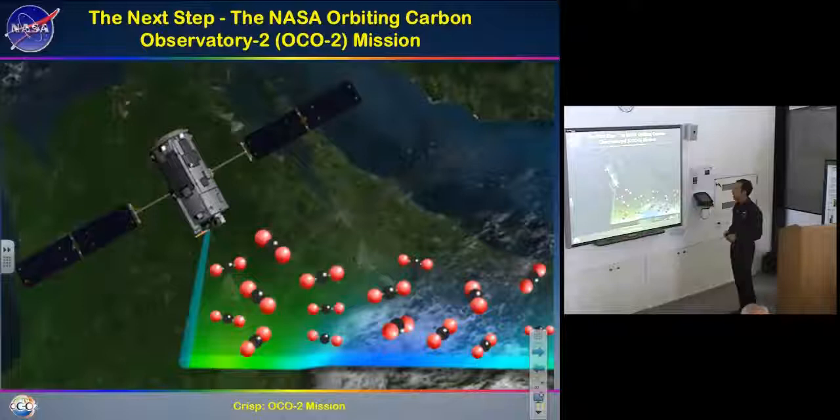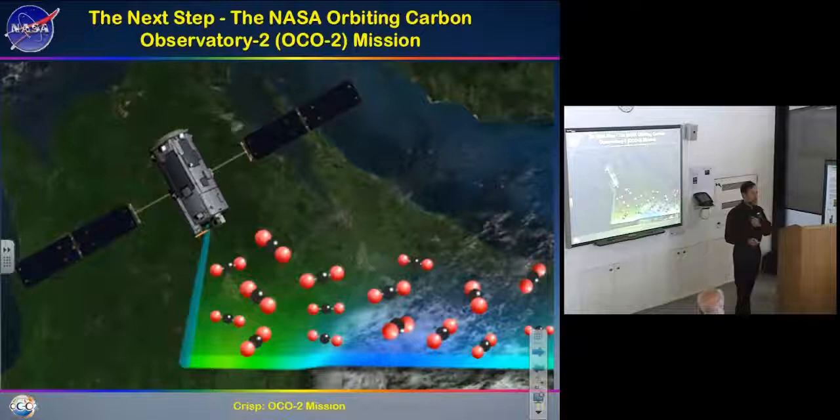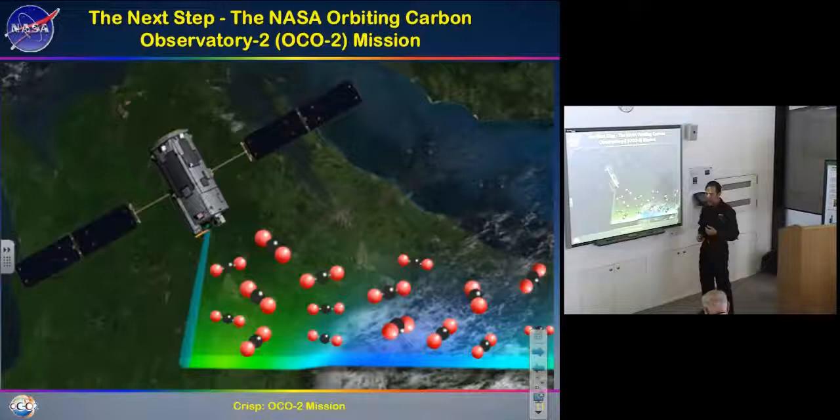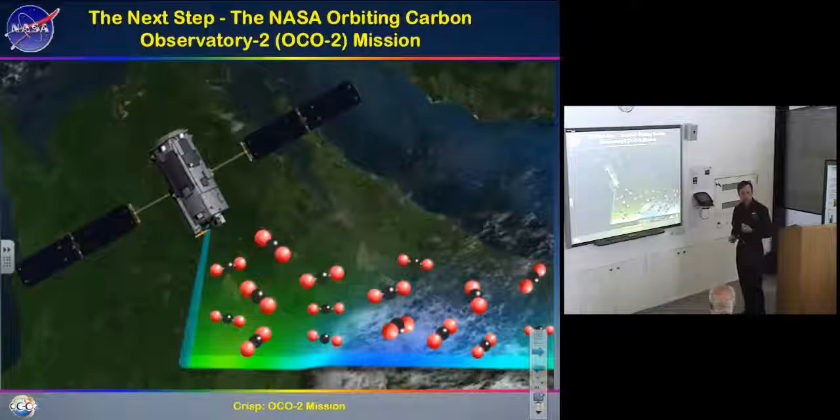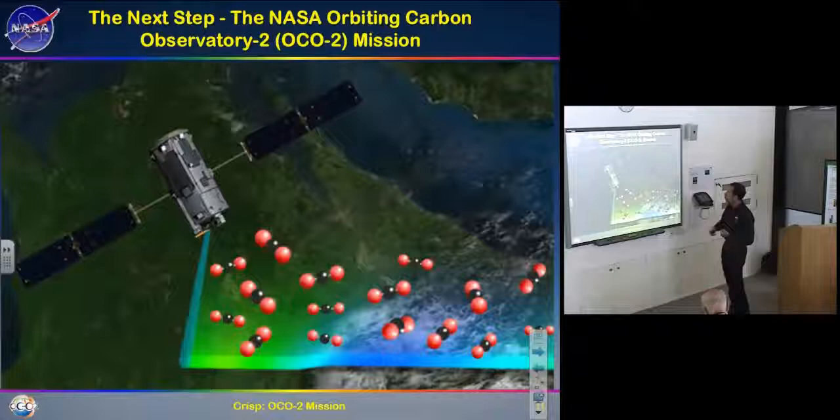The next step is the Orbiting Carbon Observatory, which goes back to 2000 and actually predates the other two satellites. We tried to launch it in 2009 after a long gestation period, but our rocket failed — the mission lasted about ten minutes and we dropped the system into the ocean. We had to rebuild it, and now it's OCO-2.